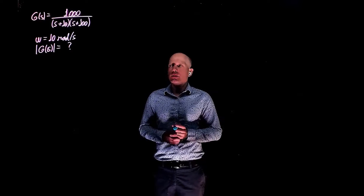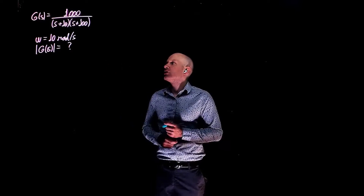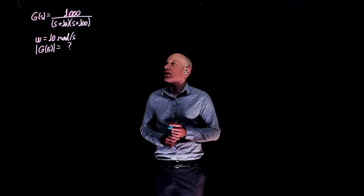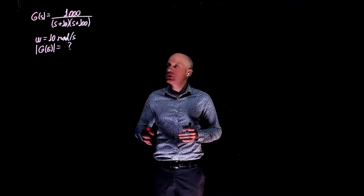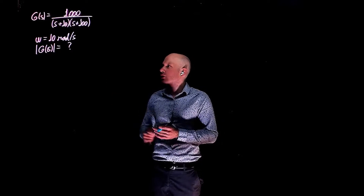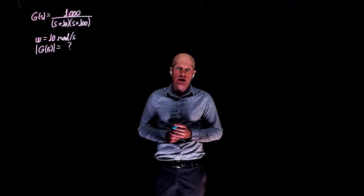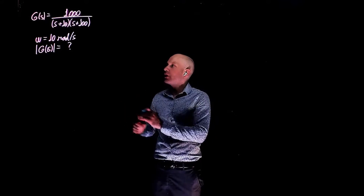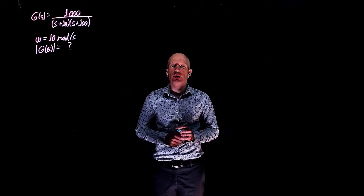In this third example of Bode plots, the function we have is 1000 divided by (s plus 10) times (s plus 100). We want to draw the Bode plot of this function and also calculate the magnitude at 10 radians per second. Let's start by calculating the magnitude of the function at that frequency.